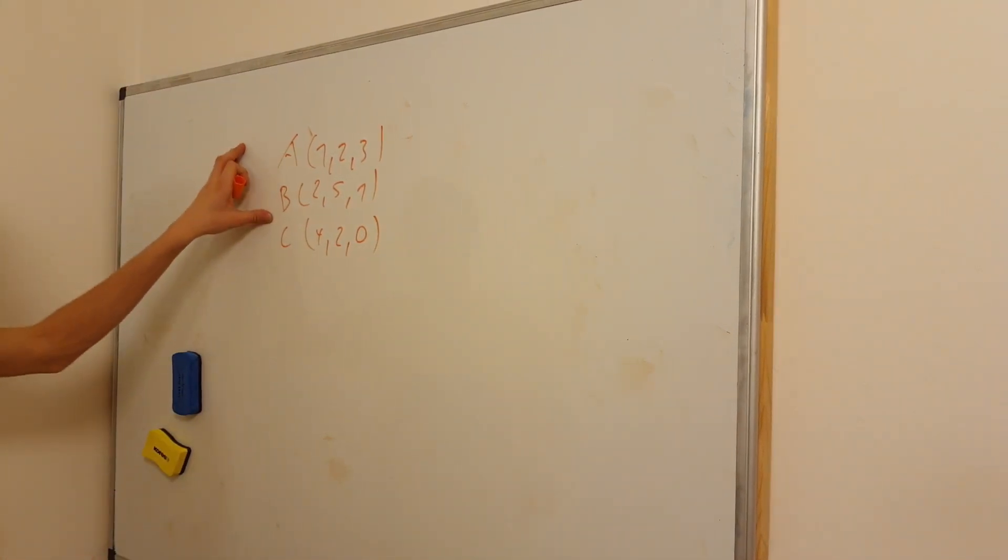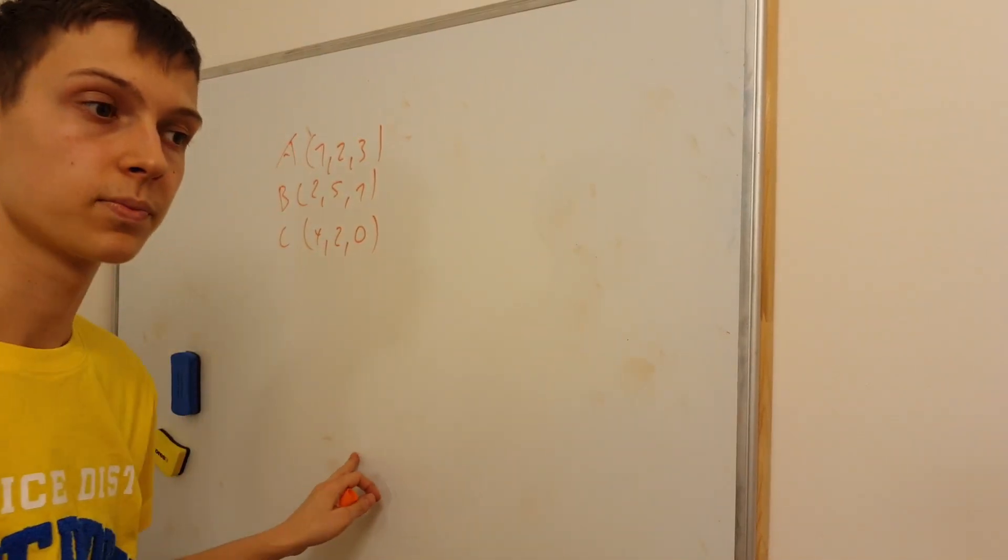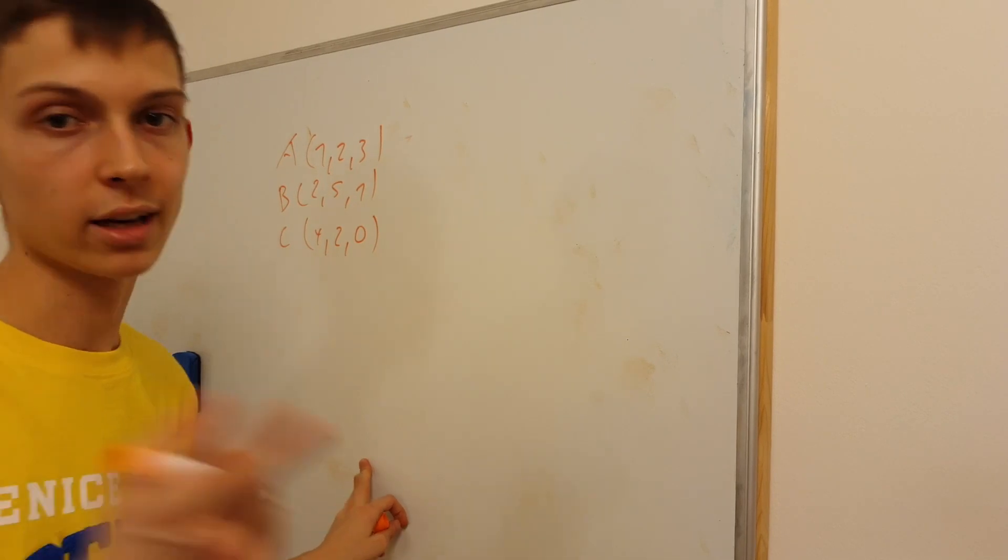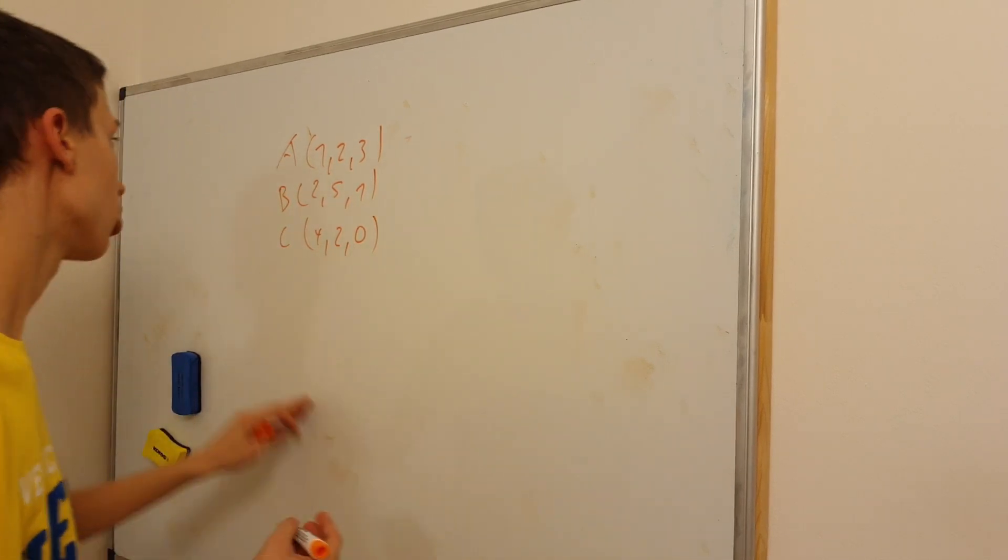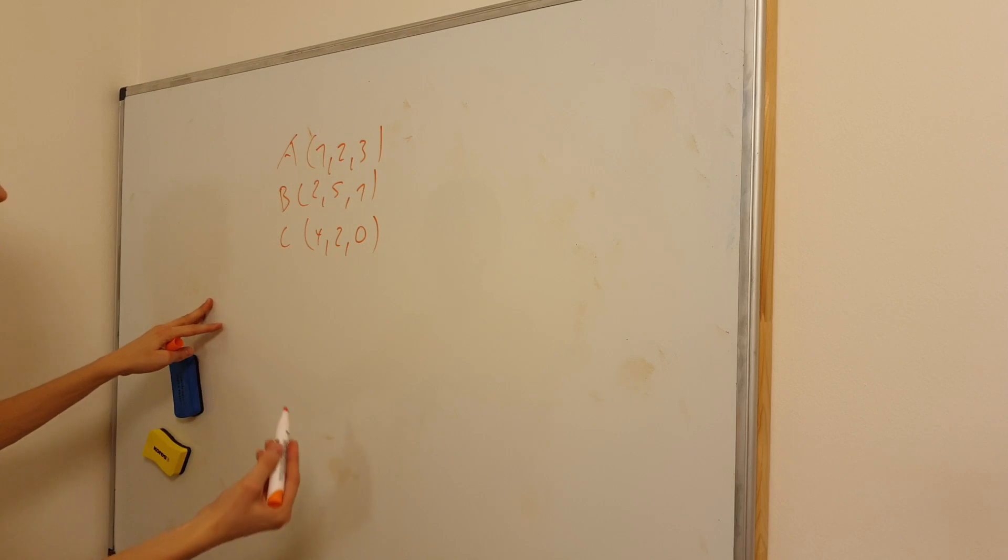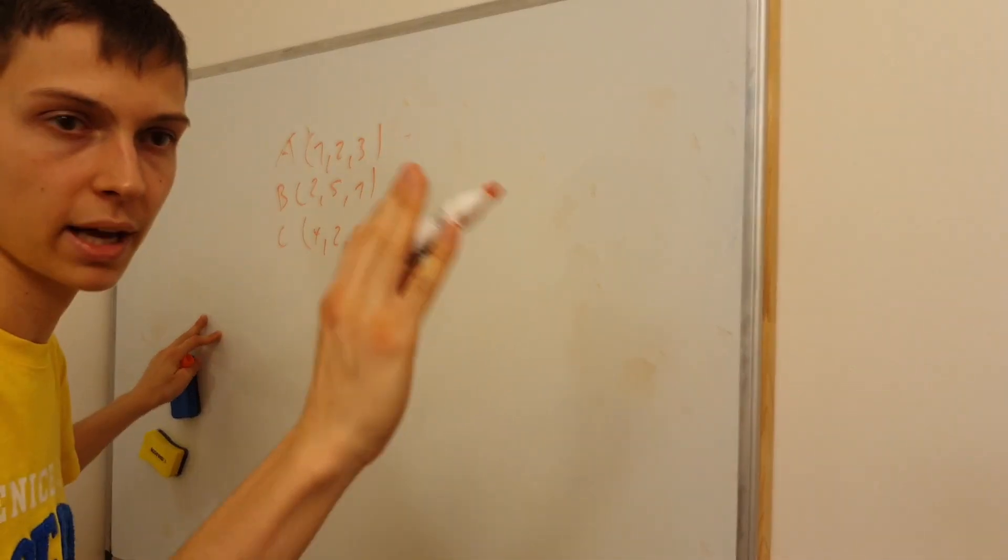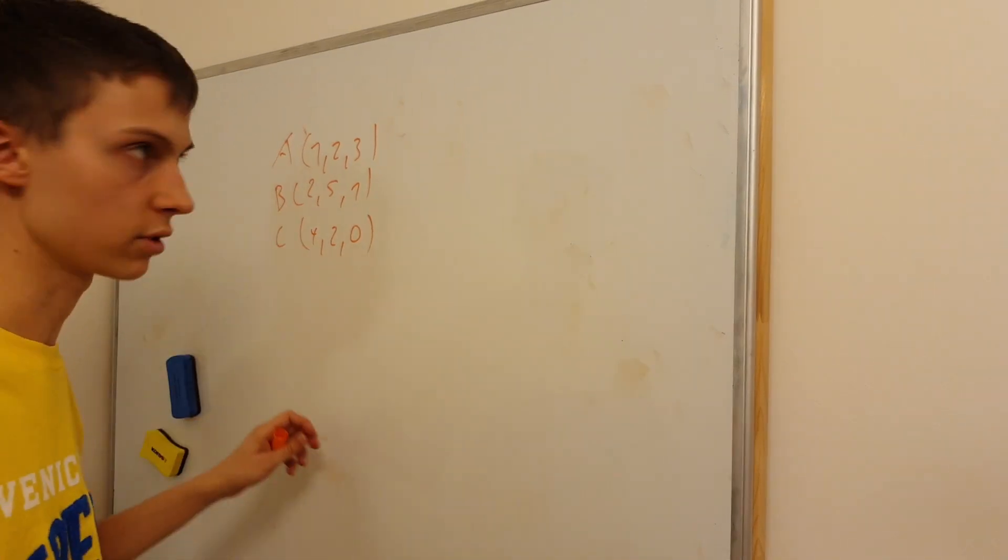How do we get a plane out of this? Well, you have to realize that in order to get a plane, you need two vectors and a point on the plane. We have three points, so we can use point A as our reference point and we can use the other two points to get those two vectors.